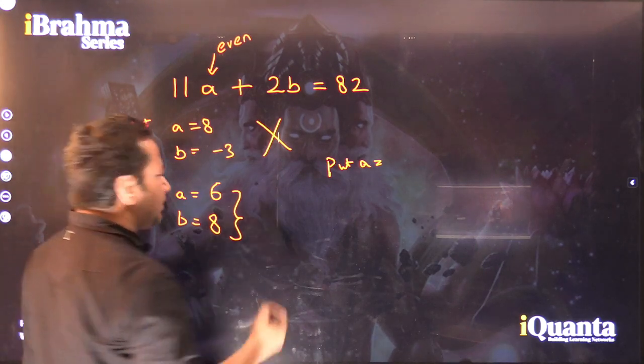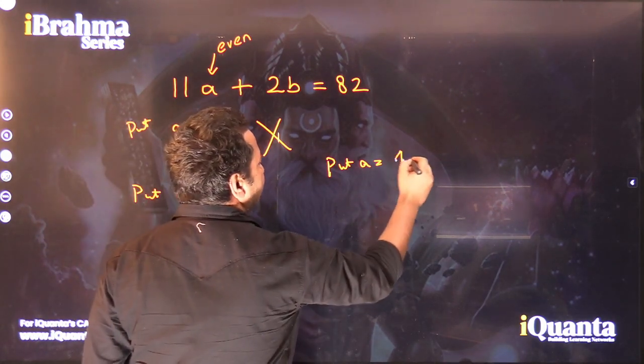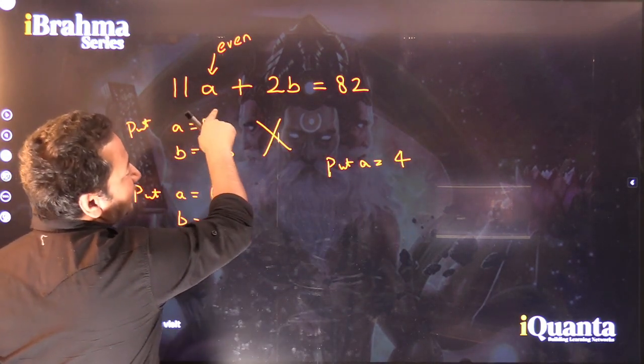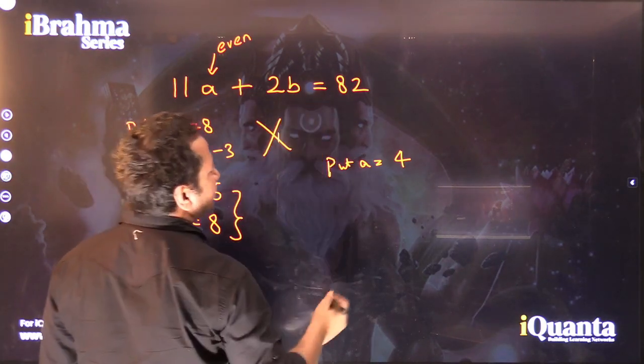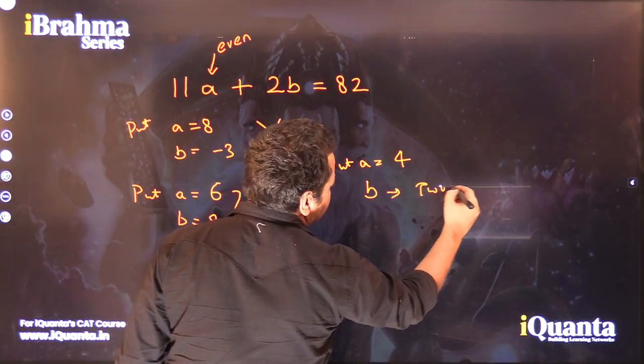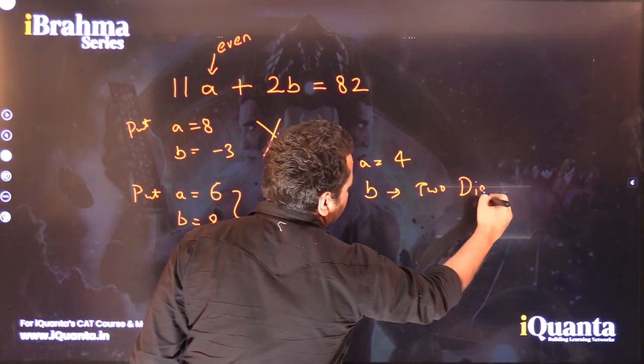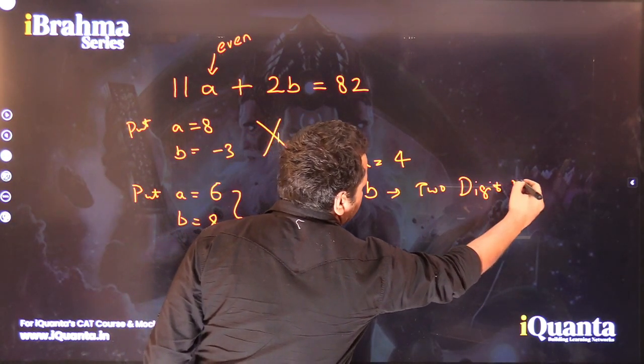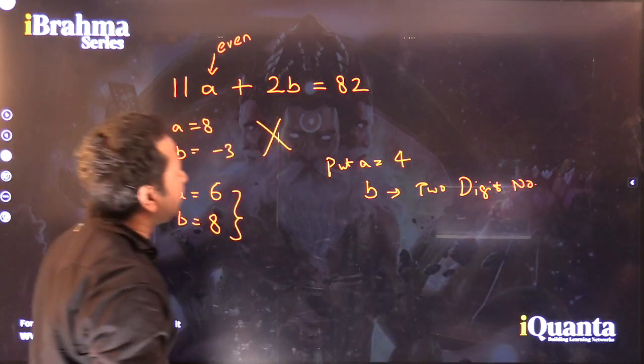But let us check it out first. If I put A as 4, 11 × 4 = 44, and if I try to find that out, then B will actually be a two-digit number.